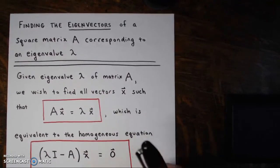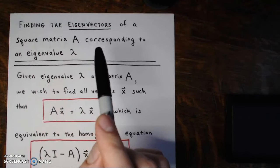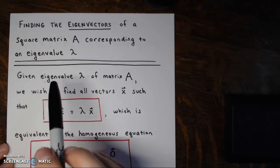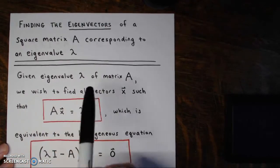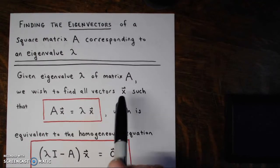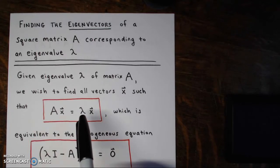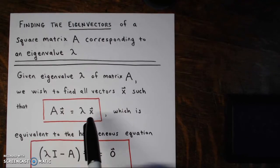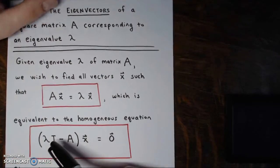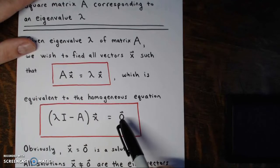In this video, we're going to look at finding the eigenvectors of a square matrix A corresponding to an eigenvalue lambda. Suppose we're given an eigenvalue lambda of matrix A. We wish to find all vectors x such that matrix A times vector x is equivalent to scalar lambda times vector x. This equation is equivalent to the homogeneous equation (lambda I minus A) times vector x equals the zero vector.